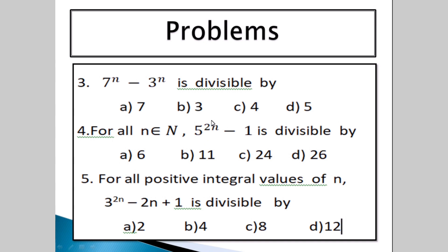Next, fourth problem: same procedure. 5 to the power of 2n minus 1 is divisible by — put n equals 1: 5 squared gives 25, and 25 minus 1 is 24. So the answer is option C.